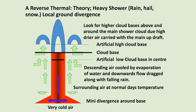A reverse thermal theory. A heavy shower of rain, hail, or snow can generate a local ground divergence. Look for higher cloud bases above and around the main shower cloud, due to higher dry air carried with the main updraft — this creates an artificial high cloud base. You also see a normal cloud base and an artificial low cloud base towards the centre where rain is coming down, evaporating and cooling the air to a much lower dew point. Descending air is cooled by evaporation of water and dragged downwards along with falling rain. The surrounding air, at normal day temperature, finds it far too cold and rises — creating a mini divergence around the base.